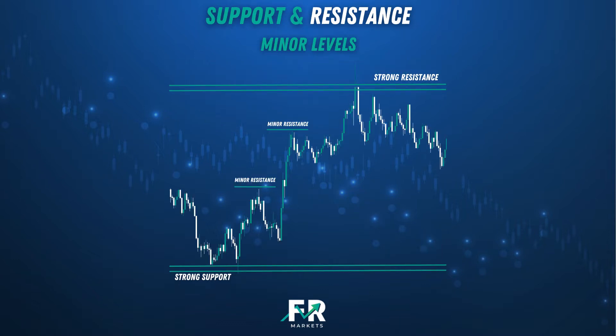It's the same when price is trending higher. It will make a high, then bounce, then start to rise again. That high can be marked as a minor resistance level. As you can see, you've got the strong support level and strong resistance level. Price bounced off the strong resistance level and hit minor resistance levels in between the strong support and resistance levels. So let's move on to the charts and actually plot some support and resistance levels.